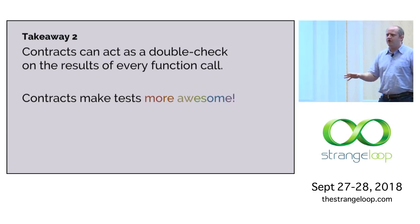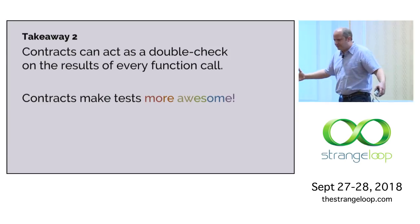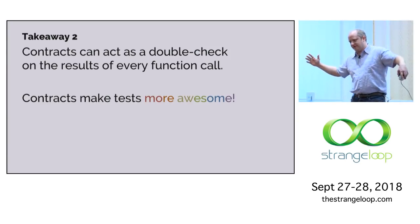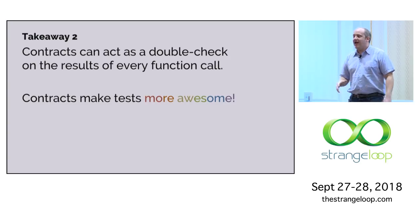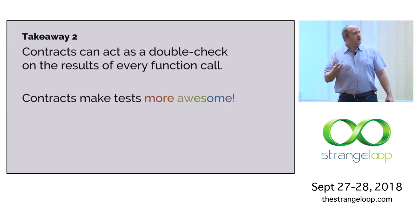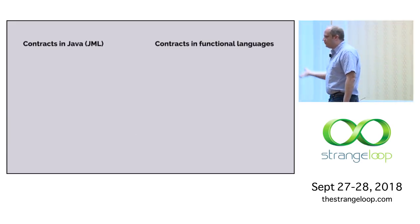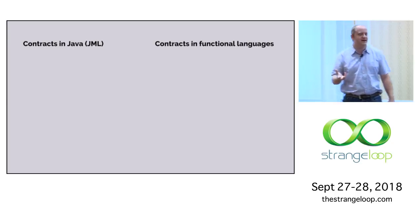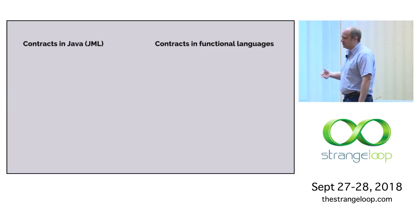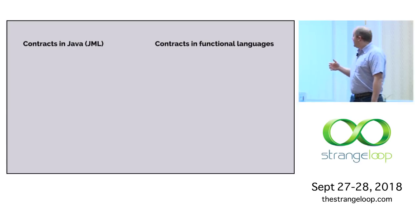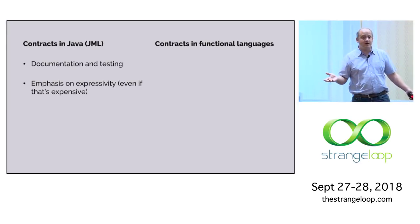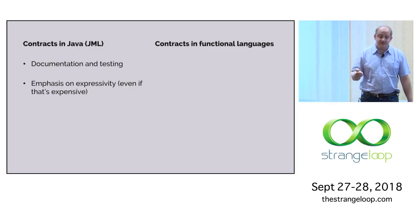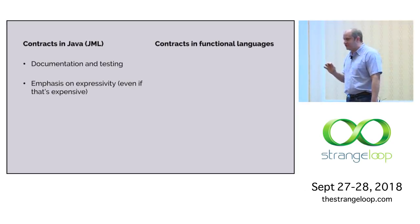That's the story about how contracts help us address this gap between what the type system gives us as input and what we actually want as input, and this conceptual leap from our test to full correctness. This is a story about JML, and I want to briefly talk about a different story. This other story is about another line of work on contracts. Contracts are a fundamental idea that's been explored a lot in object-oriented languages — that's the JML idea. But they've also been explored in functional languages, especially the Scheme and Racket realms of the universe.